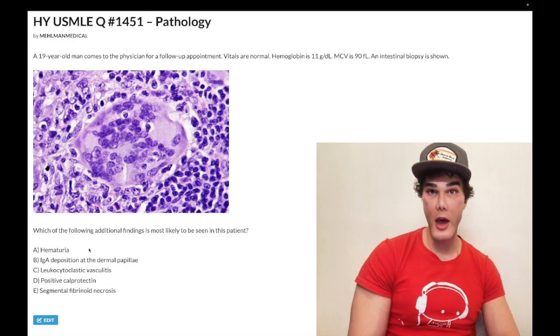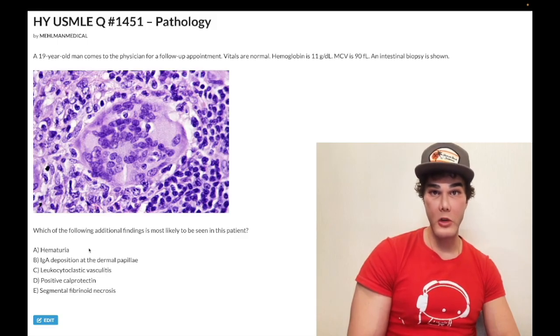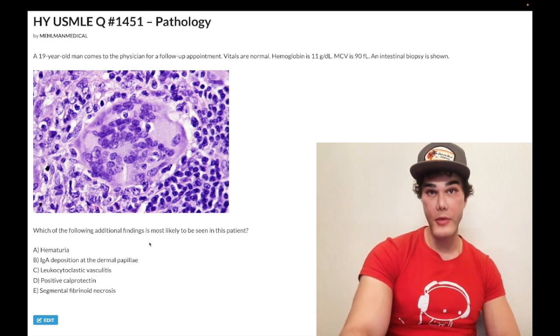Platelets jut out into the microvascular lumina, shearing the RBCs that fly by causing schistocytes. Combination of schistocytosis, thrombocytopenia is called a MAHA, microangiopathic hemolytic anemia. So in HUS, you have the triad of schistocytosis, thrombocytopenia, and renal issues, which just means elevated renin, it could be creatinine, it could be hematuria. Wrong answer.